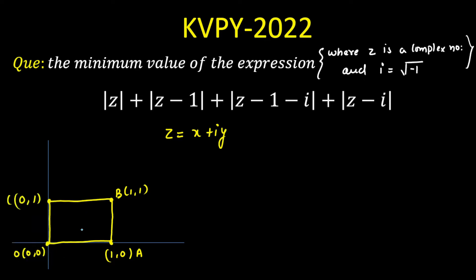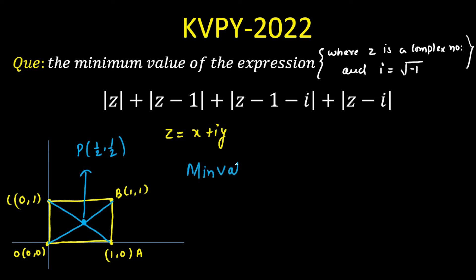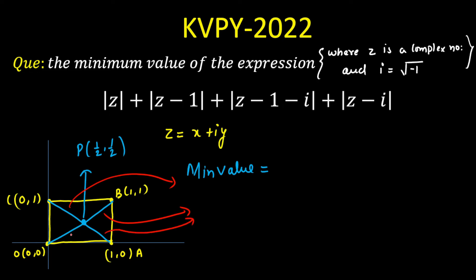If you connect O to B, that will be one of the diagonals, and if you connect C to A, that will be the other diagonal. The minimum distance you will get when you are at the intersection of the diagonals, that is the center — the midpoint of the diagonals. Let's call this point P at (1/2, 1/2). The distance of (1/2, 1/2) from the origin is 1 over root 2. So the minimum value of the expression will be 4 times that, which is 2 root 2.